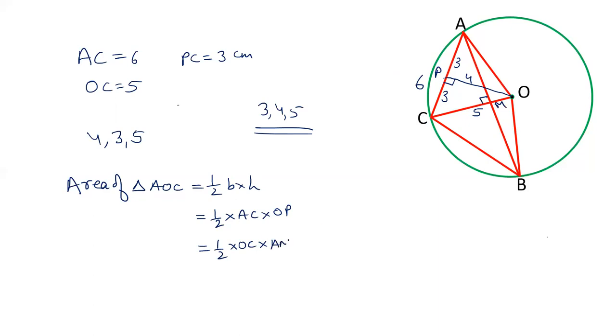And as both are area of triangle, these two equations will be same. Half AC into OP is equal to half OC into AM. Half cancelled out. We know the value of AC which is 6, OP is 4, and we know the value of OC. So we can calculate the length of AM. 6 times 4 is 24 by 5 is the length of AM. 4.8 is the length of AM.